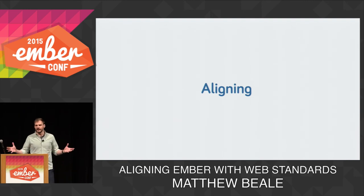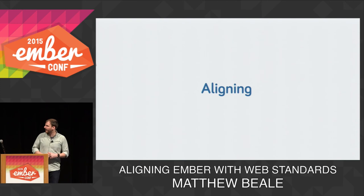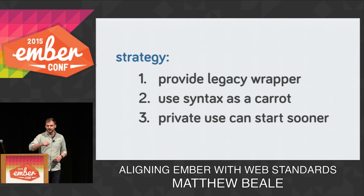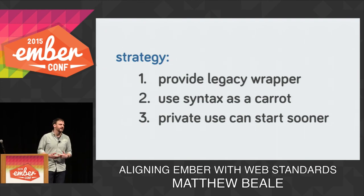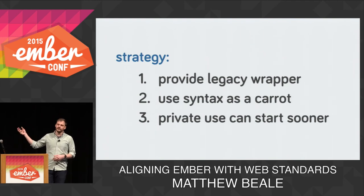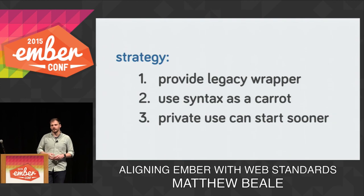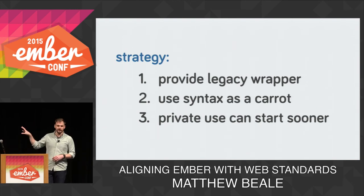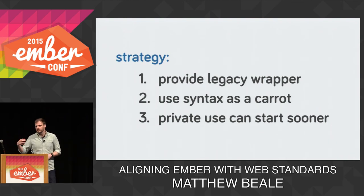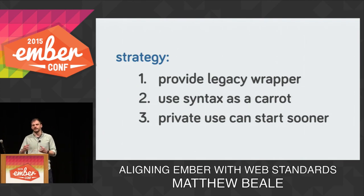So given this landscape of things that aren't compatible and some things that don't even exist yet, how do we actually go about trying to align with this? It's not going to be a switch — I wish we could just flip it. In many ways this is what frameworks do: we're ahead of the standards, identifying the problems and challenges that need to be solved. Our strategy is probably going to be something like private use — there are a lot of places in Ember internally where we use bespoke ES5 classes. If we can replace those with actual ECMAScript 6 classes, that's a good starting point. Then we can provide a legacy wrapper around that which gives you Ember objects, and use new syntaxes as a carrot to get you to move over.